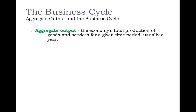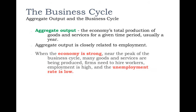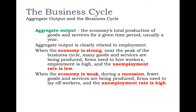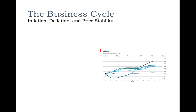Output, also known as GDP, is the economy's total production of goods and services in a given time period, usually over the course of a year. Output is related to employment: when the economy is near the peak of the business cycle, goods and services are being produced, people are buying things, businesses need to hire more people, and unemployment is low. Conversely, during a recession, less is produced, firms have no need to keep people on, and unemployment goes up.